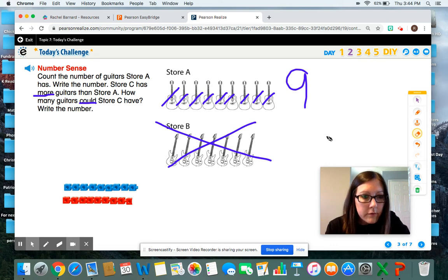One, two, three, four, five, six, seven, eight, nine. All right. That shows that both stores have nine guitars. Is nine more than nine? No, Mrs. Barnard.